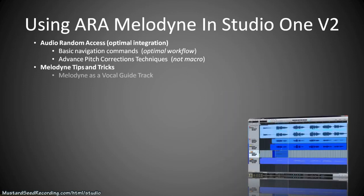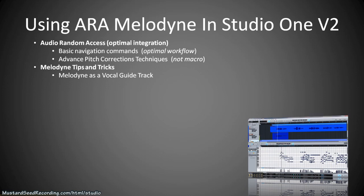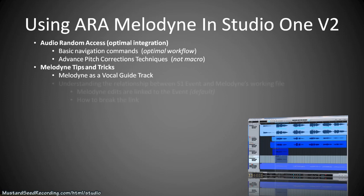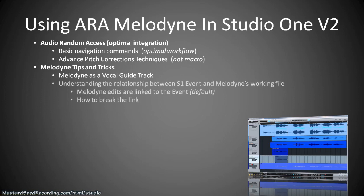For example, we'll show you how to use Melodyne to create vocal guide tracks. This is when you record the vocal, correct it to perfect pitch, then re-record the vocal while listening to the original track. Each iteration of that cycle actually produces a better vocal track — a great way to use Melodyne as a comping tool.